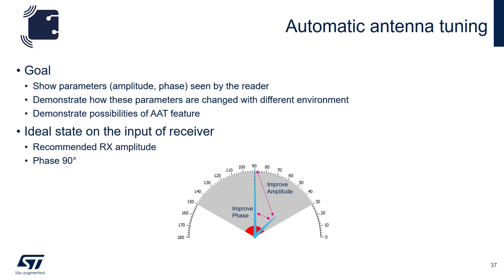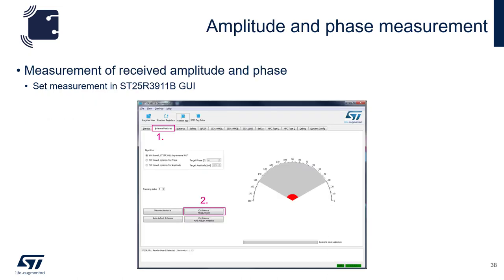For the 3911B, the recommended receiver amplitude is typically between 2.4 and 2.7 volts, and the input to the receiver must stay below 3.1 volts per the datasheet. The recommended phase is 90 degrees, which puts you at the middle of the measurable range of the internal ADC. We'll look at the effects of devices brought into the field by measuring the received amplitude and phase of the discovery board. To do this, we must set up the measurement in the 3911B GUI by going to the antenna features tab and hitting continuous measurement.